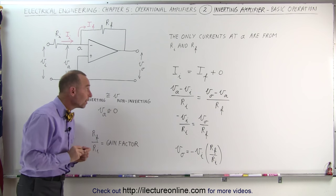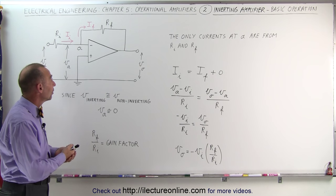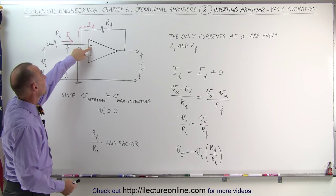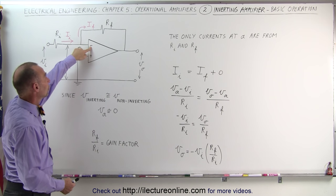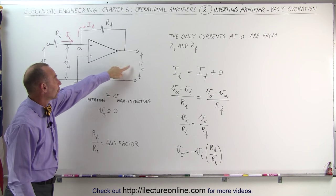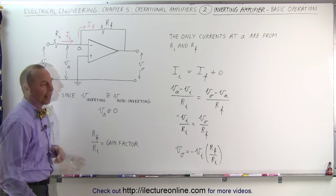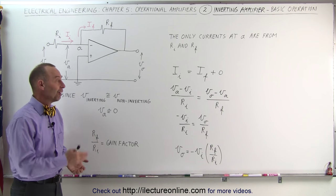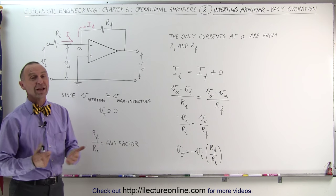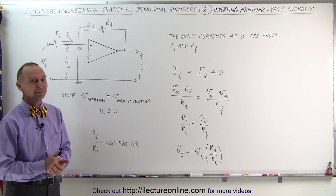So that's the basic operation of an operational amplifier with the signal connected to the inverting terminal — you get an inverted output voltage relative to the input voltage. In the next video we'll do an example of how we actually use that in a real life circuit. And that's how it's done.